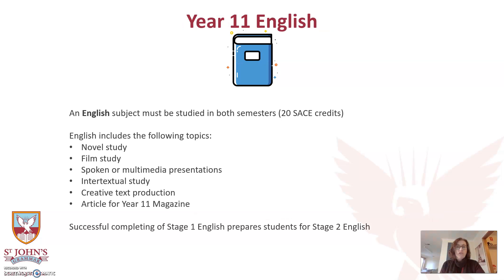Year 11 English is often known as General English, and all students must successfully complete two semesters of this. Our Stage 1 English course covers novel and film studies, as well as an intertextual study where students have the opportunity to compare texts of their choice, demonstrating their understanding of the author's craft. Creative tasks continue to be a feature of this course, and the highlight is contributing a text to the Year 11 Literary Magazine, a publication that goes out to all Year 11 students. Students will have several opportunities to choose their own texts to write or study, and this course prepares students for Year 12 English.